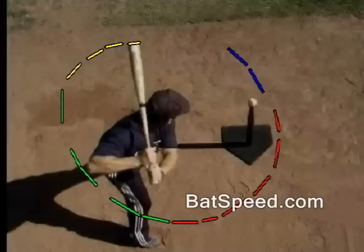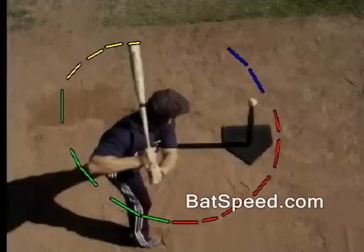Notice I've already traced out the path of the bat, and what you see in yellow here is the rearward acceleration of the bat by a mechanic we refer to as PLT — prelaunch torque — because it occurs before the rotation of the shoulders. This is mainly done by the rotation of the back forearm and the push-pull effect of the hands.